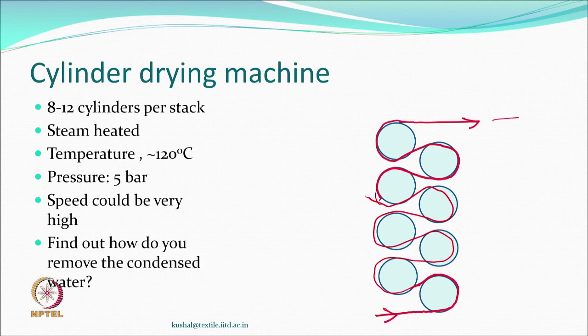One thing to think about: when the fabric dries, steam condenses inside the cylinders — how do you remove the condensed water? If you don't remove it, gravity keeps the water at the bottom and it accumulates. When you take out the hot condensed water, you would pass it through a heat exchanger to recover the heat as well.